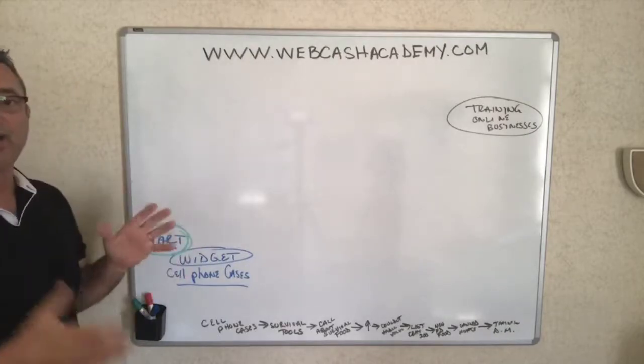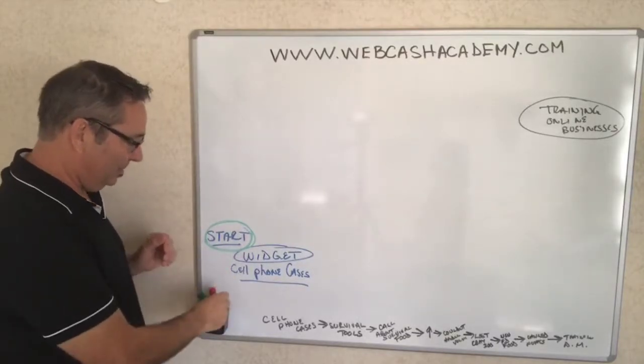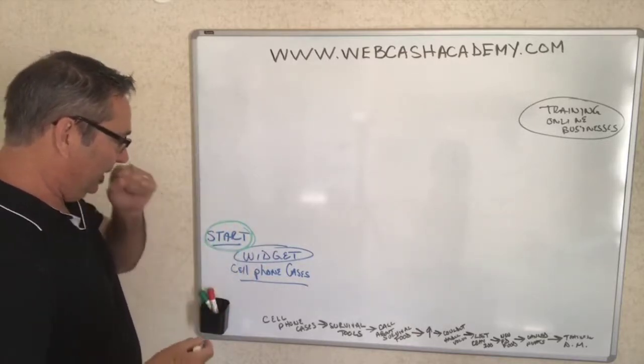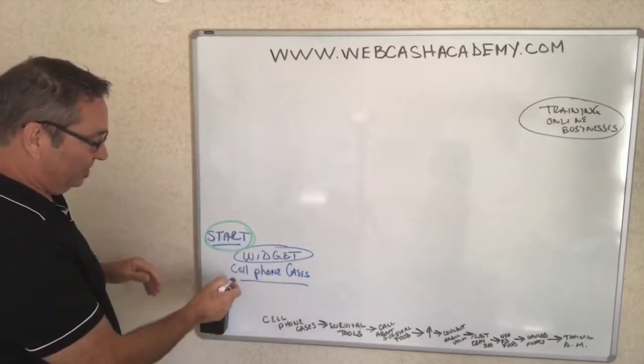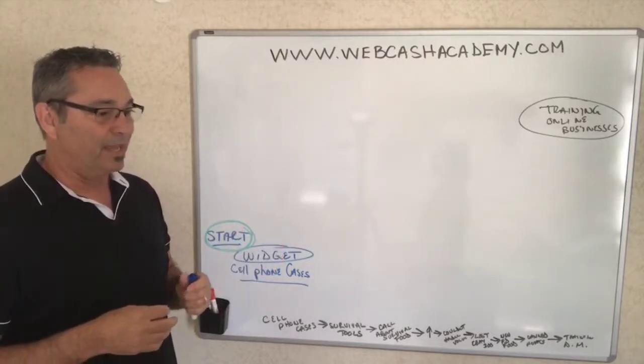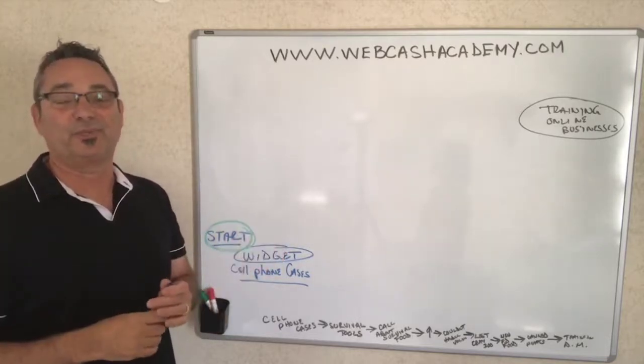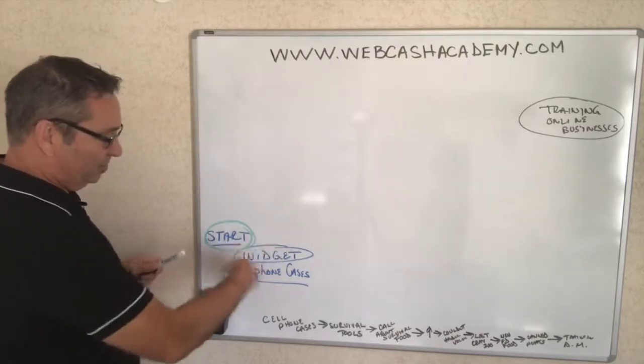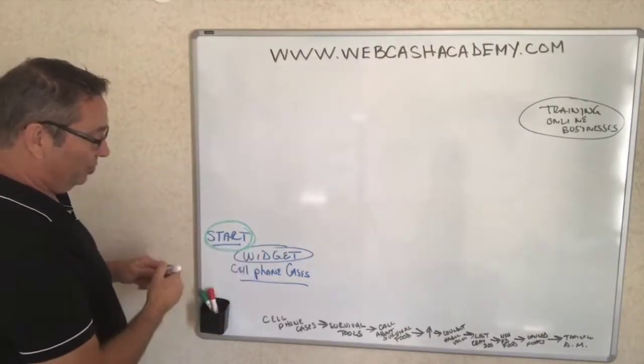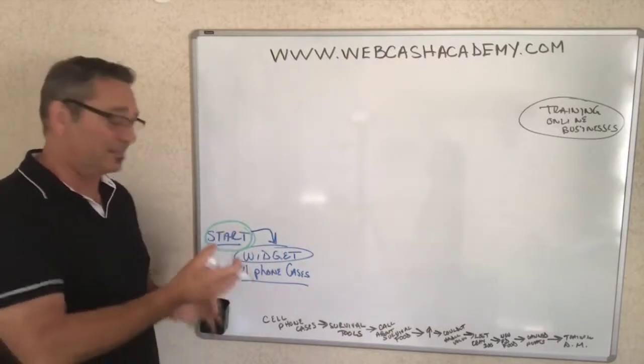You have to start somewhere. You have to start with a thing, a widget, whatever it is. You pick something and decide this is what I'm going to sell, this is what I'm going to do. This is what most people do. In my case it was cell phone cases. I researched the market and said everybody's got a cell phone and they have to have cases. I went to eBay and tons of cell phone cases were selling, so that was going to be my product. Whatever your product is, this is your starting point.